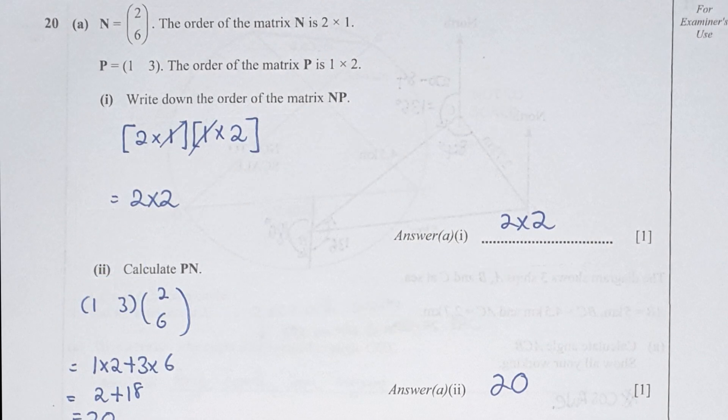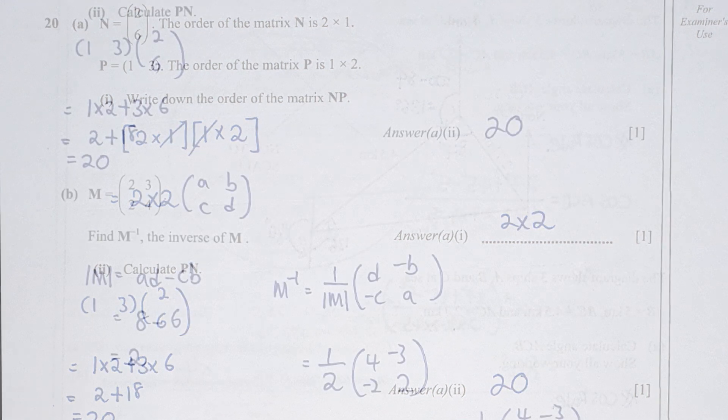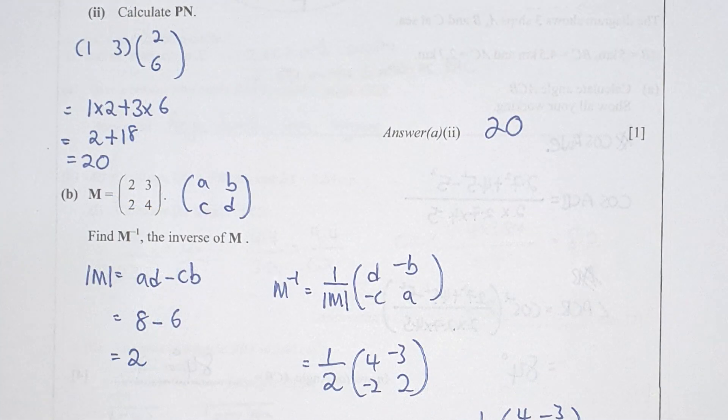Question 20: write down the order of NP — it is 2 by 2. To calculate P, taking 1 times 2 and 3 times 6 and adding them both gives the result of 20.